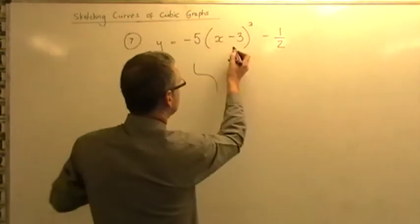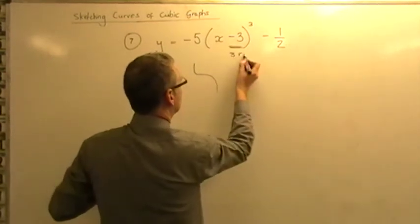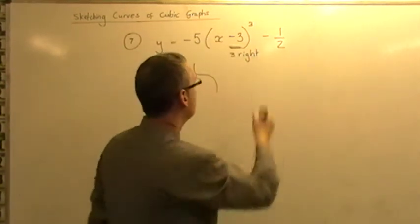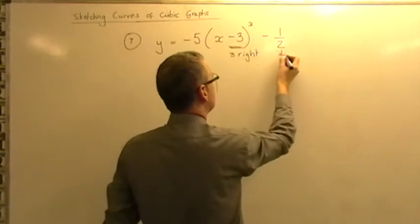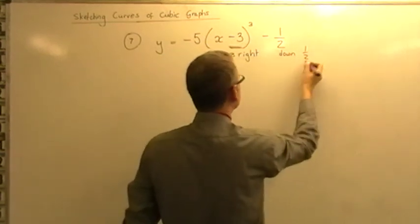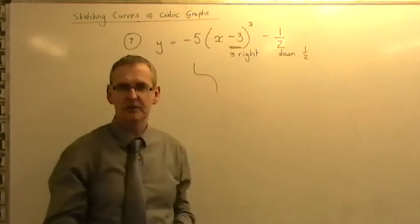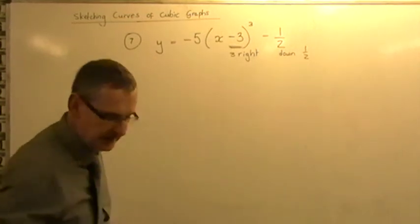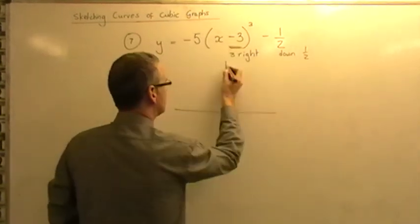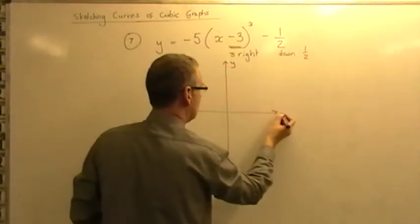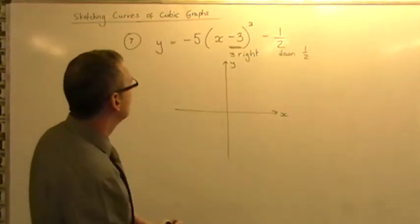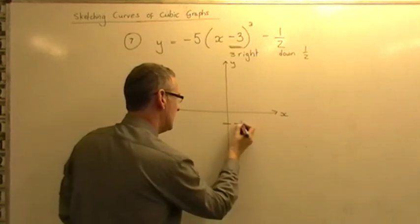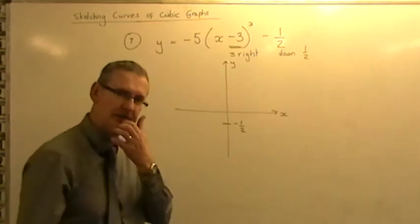Okay, what does the minus three tell you inside the bracket? It means go three right. Not three left, as you might think, to minus three on the x-axis, but three right. Minus half on the end means go down just half a place. Okay, the five in front there tells you it's quite steep. So the sketch, when we come to draw the thing, is going to look like this. Set up the axes, y and x, make sure you keep labeling y and x. We've got a cubic graph moved half down. So anywhere down here you like, just indicate minus a half on the y-axis.